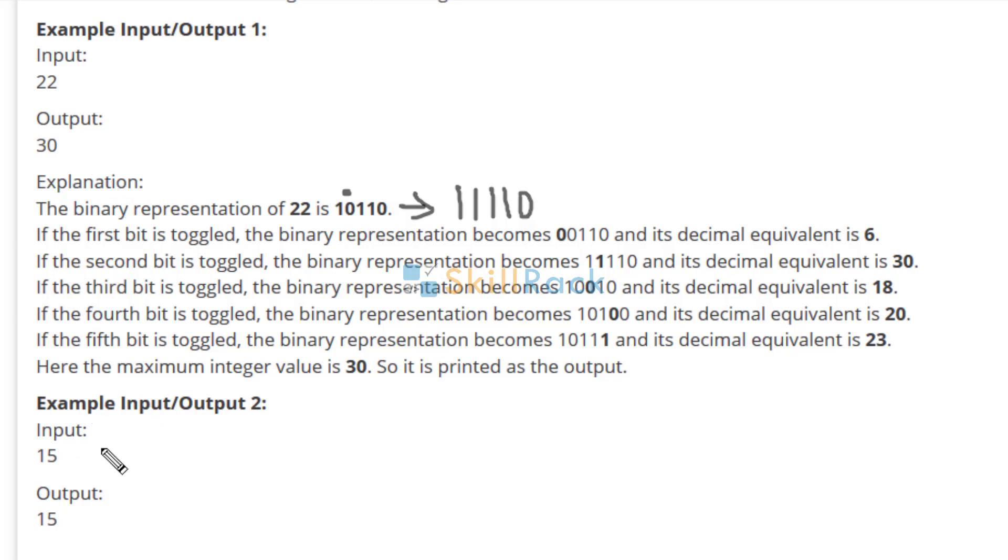In this example 15 all are ones. So there is no zeros to be toggled. So the value will be 15 itself. So now let us discuss in detail how to implement it.